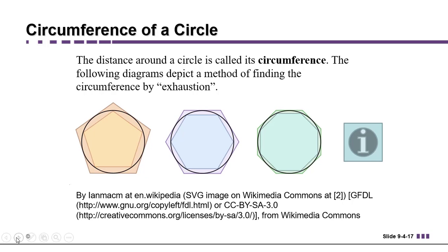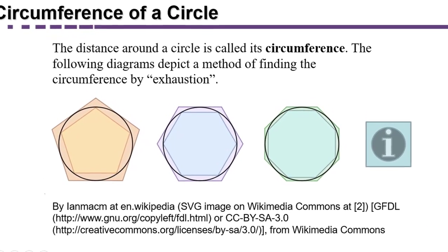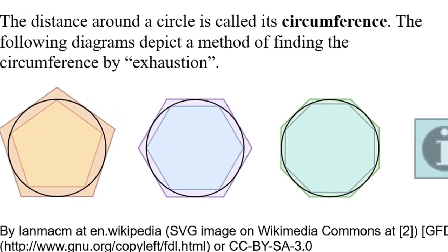Originally, the way that we approached the problem of finding the perimeter of a circle, which we don't call perimeter, we call it circumference, was to compare it to polygons. We imagined drawing a polygon on the outside of the circle and one on the inside.